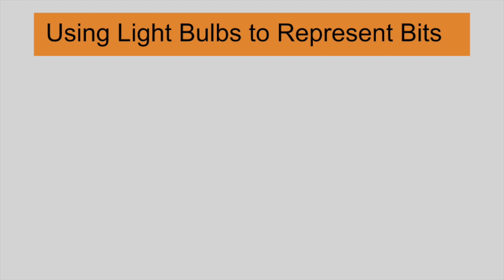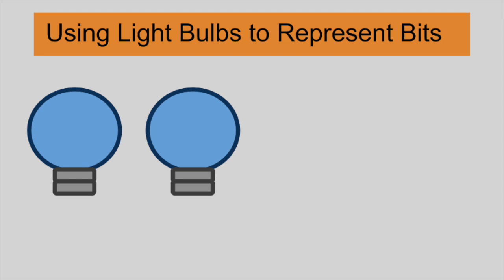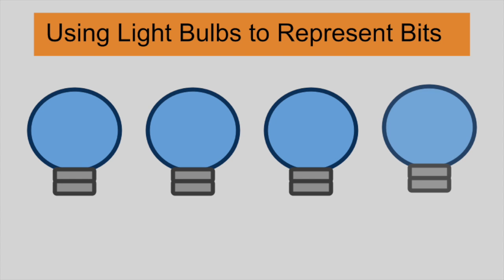Let's use light bulbs to represent bits. Suppose we have an array of four light bulbs. When a light bulb is on, we can represent that on state as the digit 1. Conversely, we can represent the off state as the digit 0.